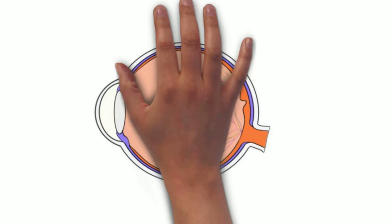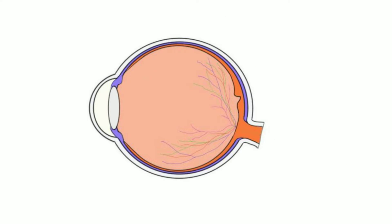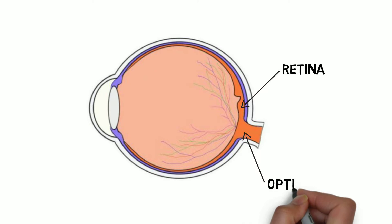The optic nerve is a sensory nerve responsible for transmitting information about vision to the brain. The nerve begins in the retina as the axons of cells called retinal ganglion cells. These axons come together to leave the eye at a region called the optic disc and form the optic nerve.